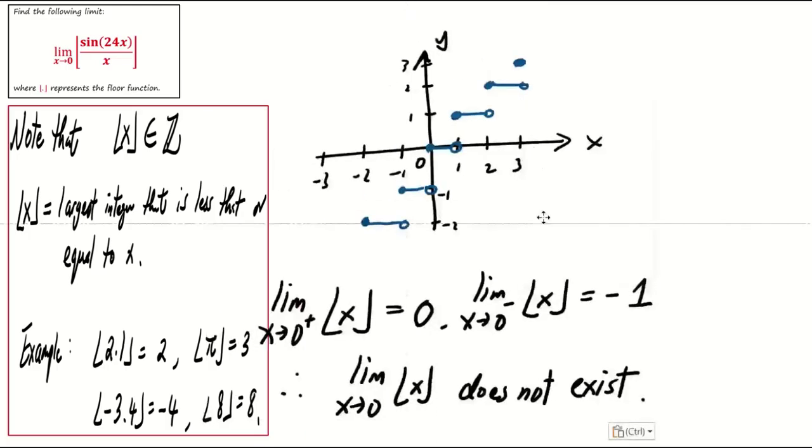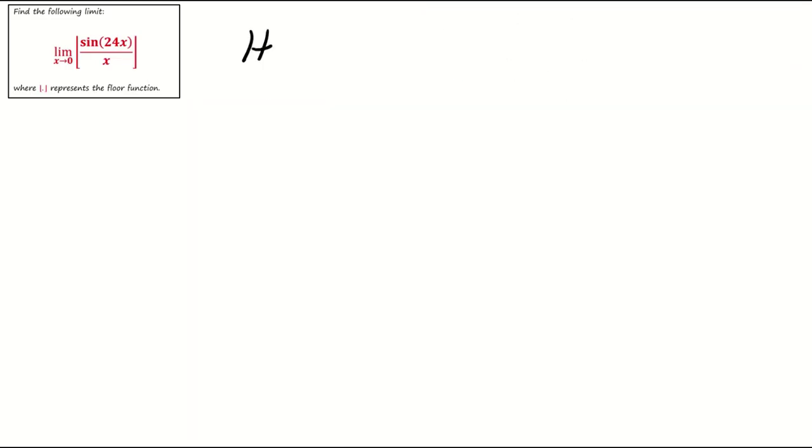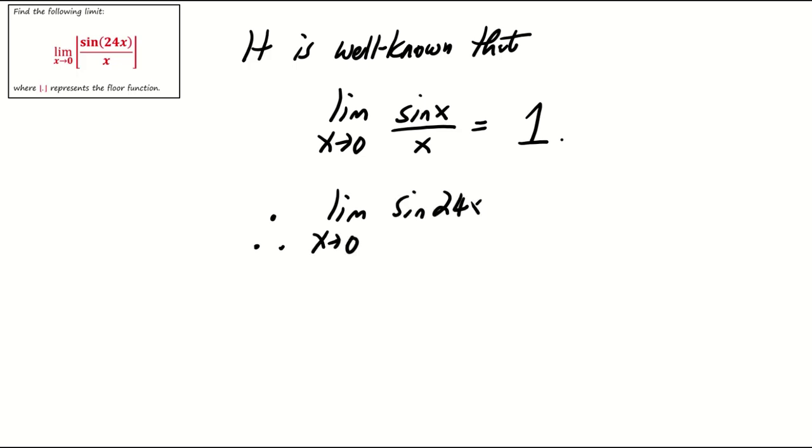After understanding the floor function's behavior, let's revisit the well-known limit of sine x over x where x tends to 0. This limit is 1. Hence, the limit of sine 24x over x as x tends to 0 is 24.